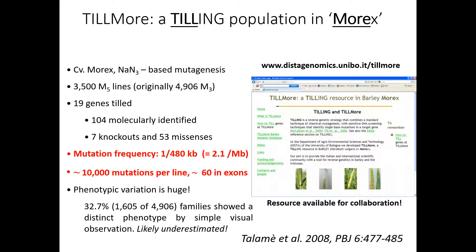Our material was Tillmore — a tilling population from Morex. The reason we chose Morex about 12 years ago is because even at that time, Morex was becoming the key model species for those working in barley. More recently, Morex has been sequenced and a high-quality assembly has been put together by Neil Stein and collaborators, so we now have the whole sequence available — a great advantage particularly for tilling. We have about 3,500 M5 lines; originally much more, but a few had very low germination. We tilled in a reverse fashion 19 genes, but this is rather tedious and lengthy, and the number of knockouts is quite low — we only had seven knockouts and 53 missenses.